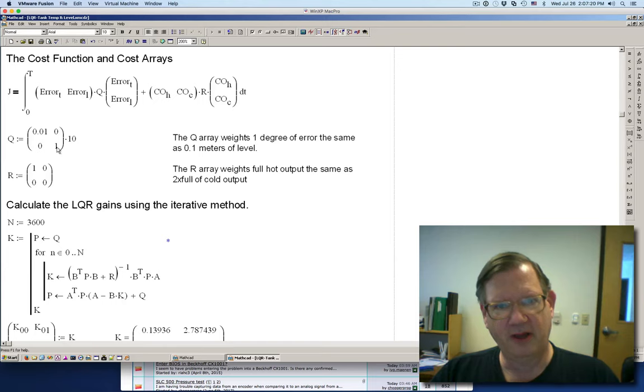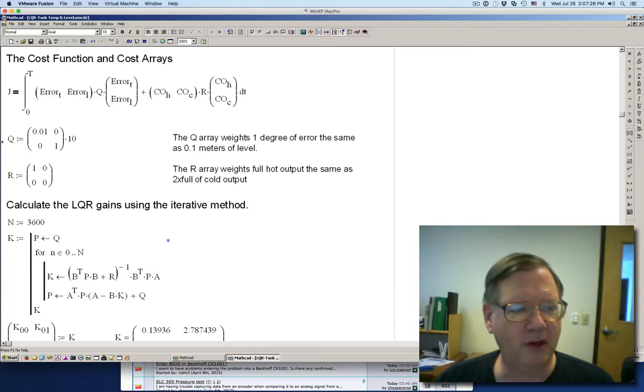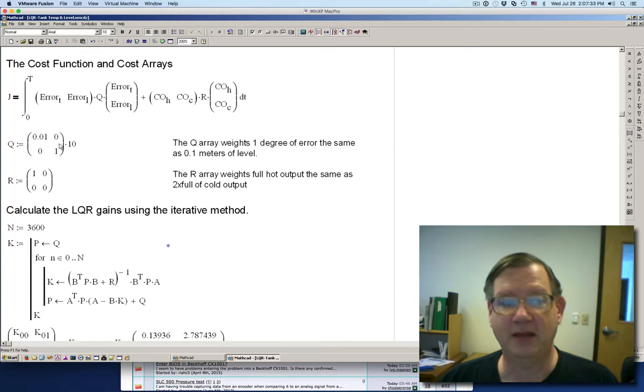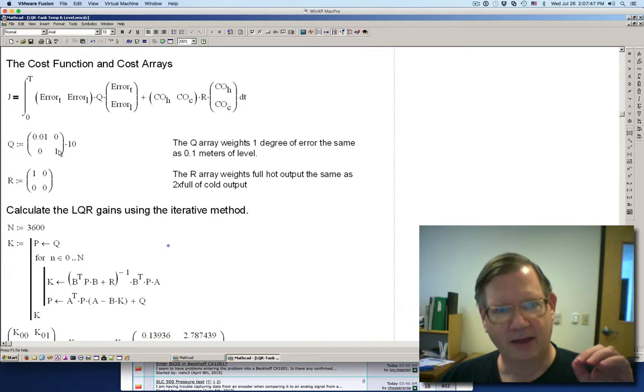And now what I need to do is choose a Q and R. Well, this is one of the things that people always have questions about is how do you choose the Q and the R? And for the most part, if you want to, this is for temperature and this is for flow. And if I want to weight the temperature highly, then I need to make this Q array bigger than the flow array. And then also I need to weight the difference between level error and the temperature error.